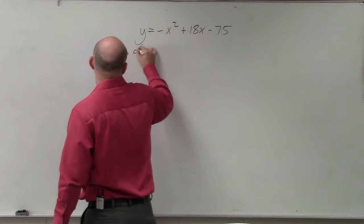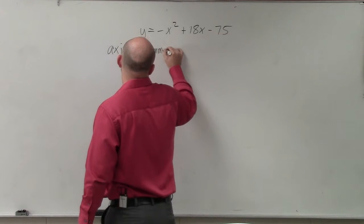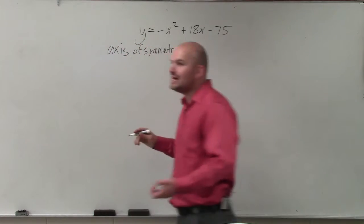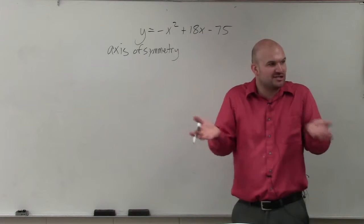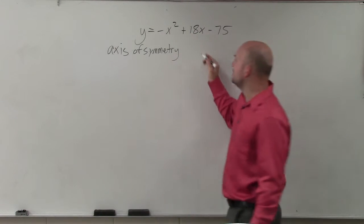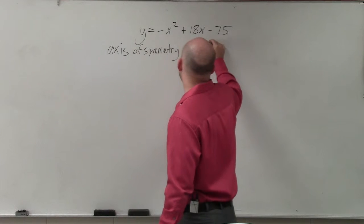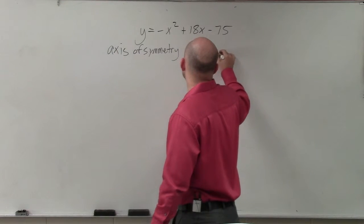was to use the standard form. And there's a formula for the axis of symmetry when it's in standard form. We like vertex and axis of symmetry when it's in vertex form because it's just h and k, right? But when it's in standard form, you have to use x equals opposite of b divided by 2 times a.